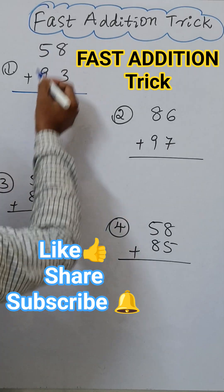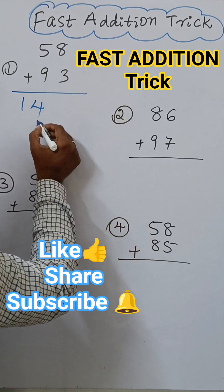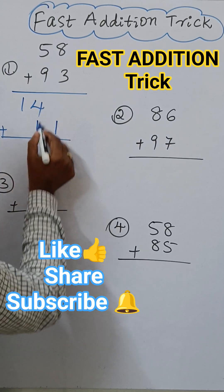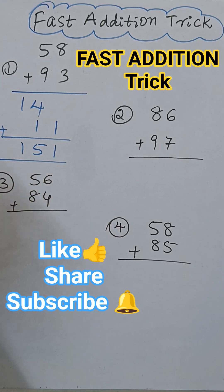9 plus 5, 14. 8 plus 3, 11. And then add 4 plus 1, 5, 1. 151 is the answer.